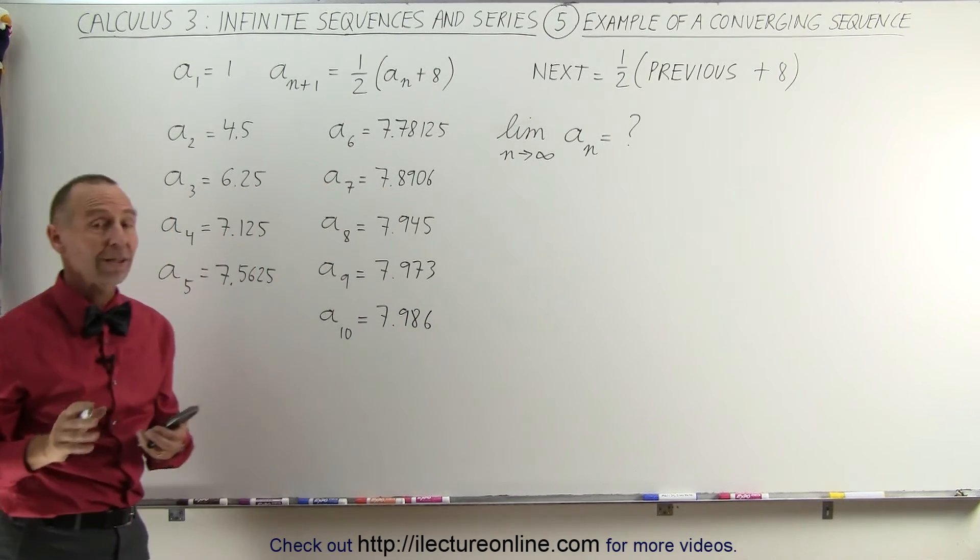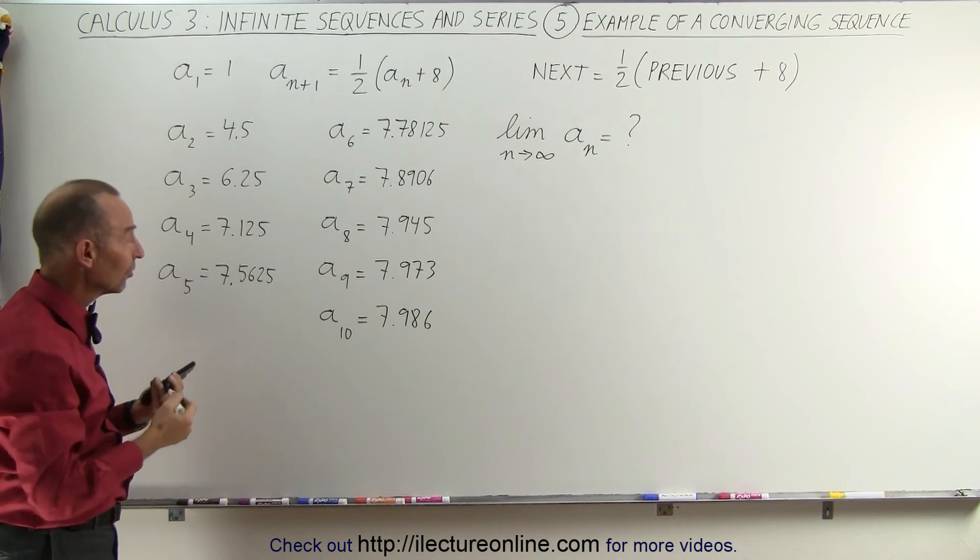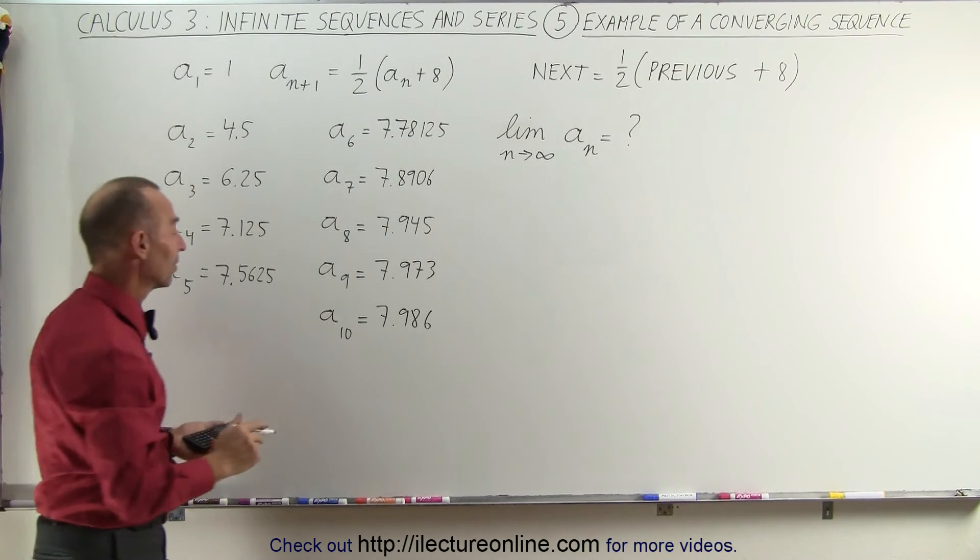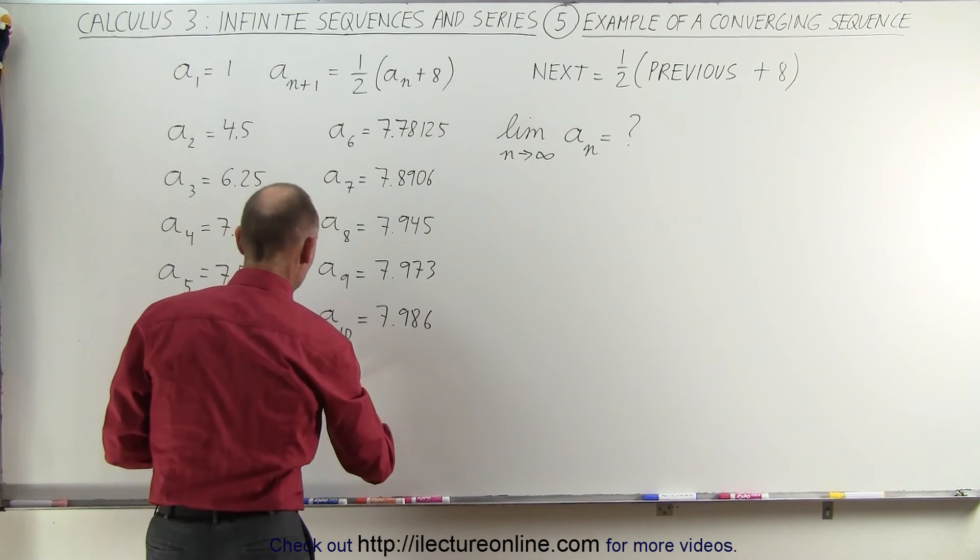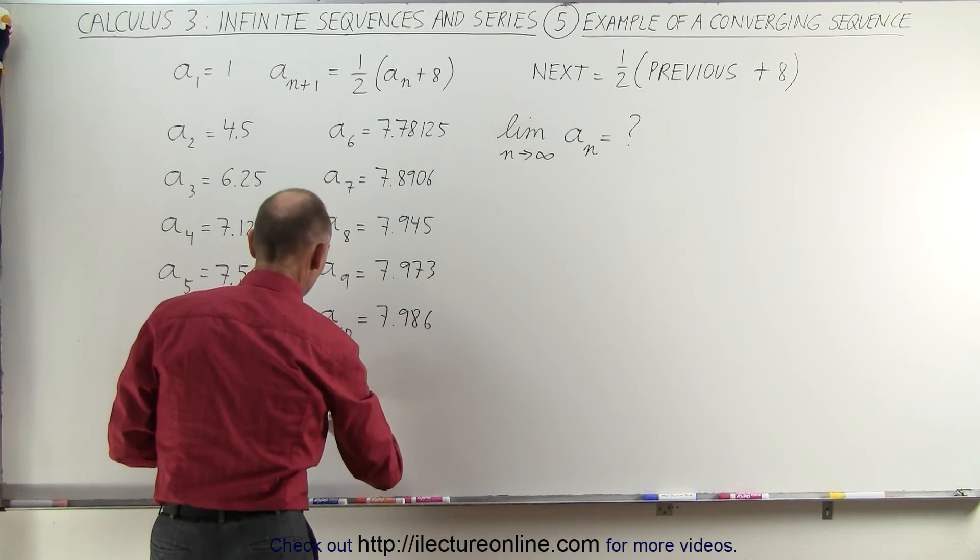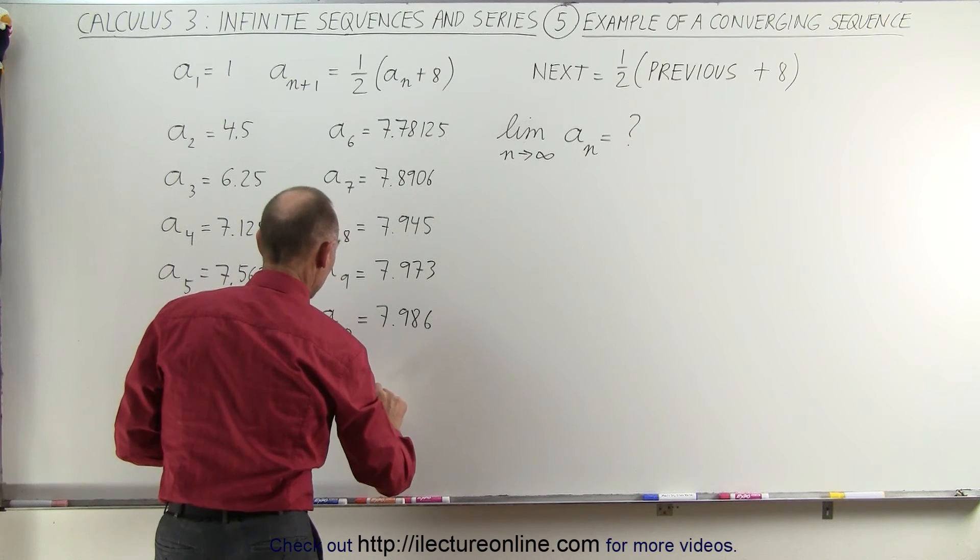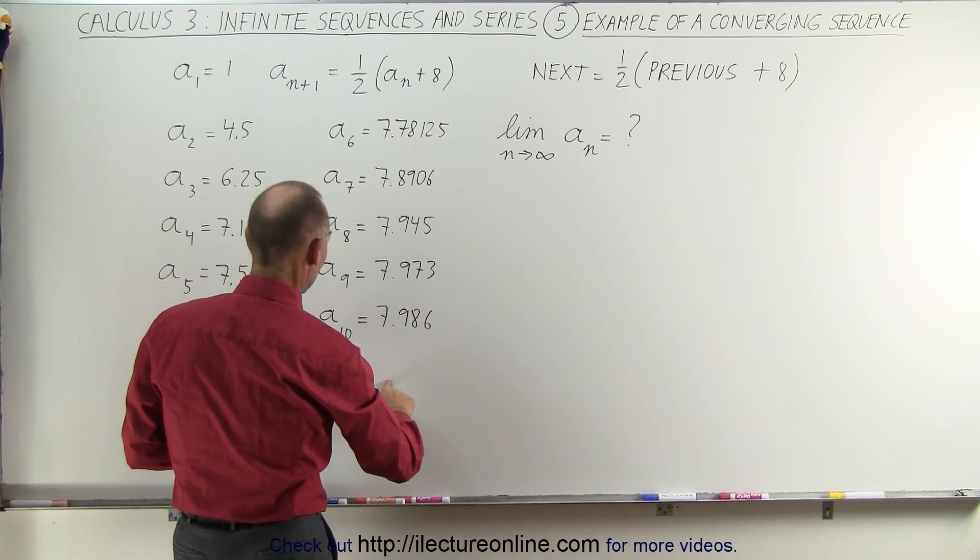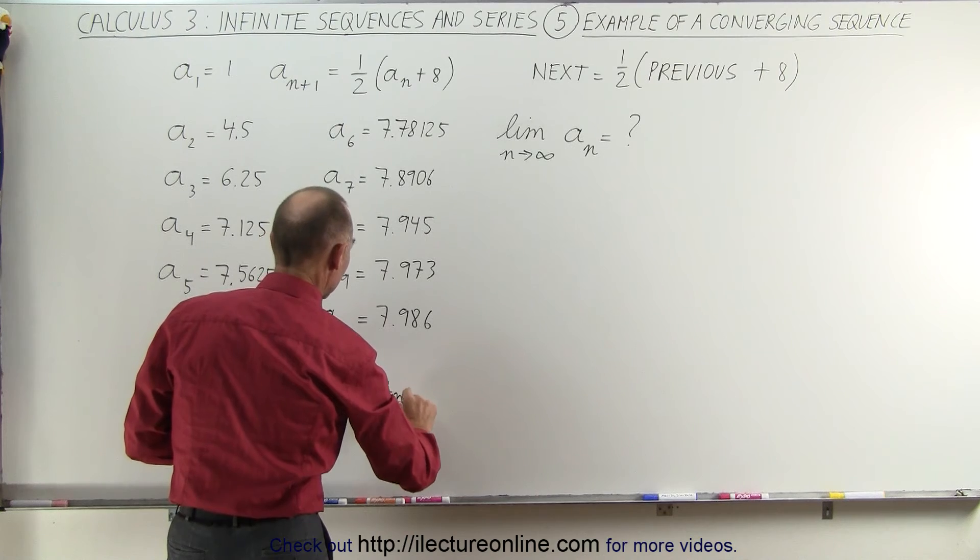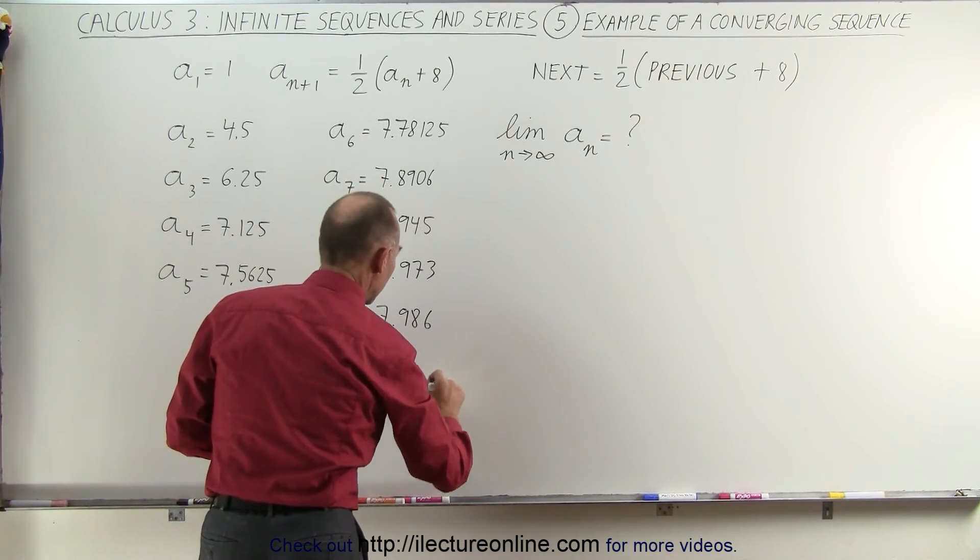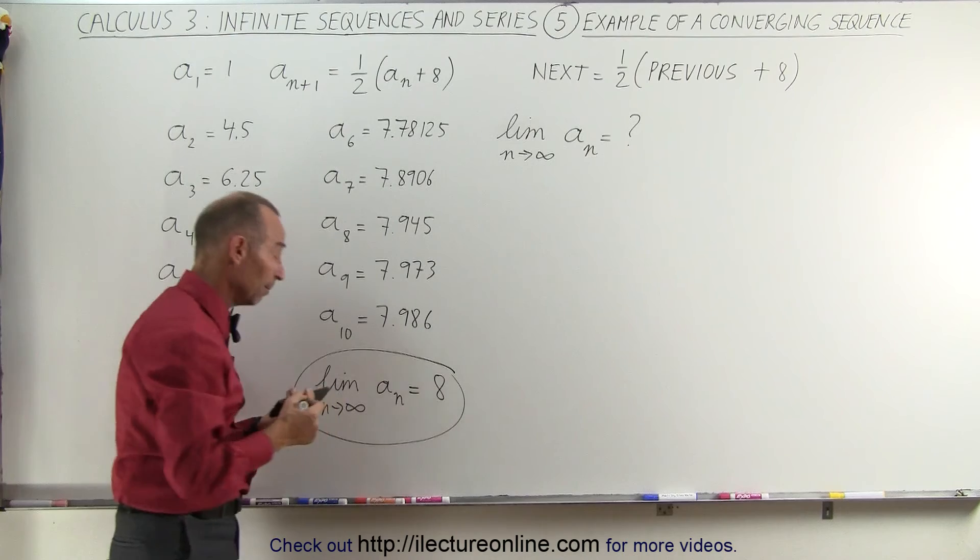It's beginning to look like this sequence is going to converge to eight. So I would then go on a limb and say that in the limit as n approaches infinity of this particular sequence, which is a to the n, that's going to be equal to eight, and that is my guess.